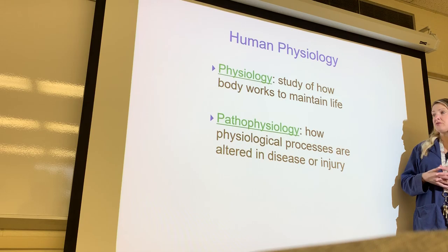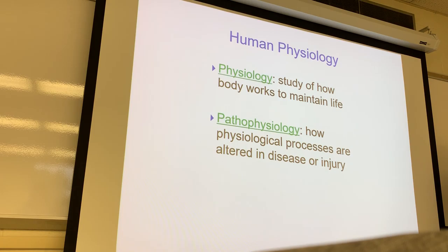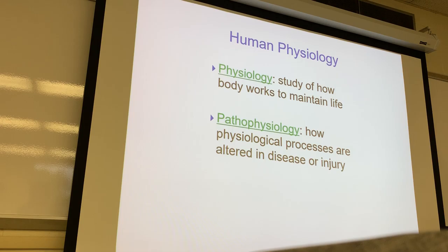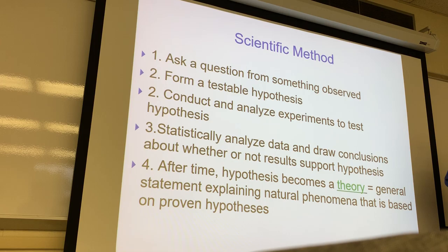Pathophysiology — when you see the prefix 'patho,' you're thinking of disease. This is what happens when the physiology doesn't work correctly and disease results. For example, mitosis is the process by which our cells normally divide. When there is an issue maintaining the balance of how many cells divide, we can end up with cancer. That's an example of pathophysiology.